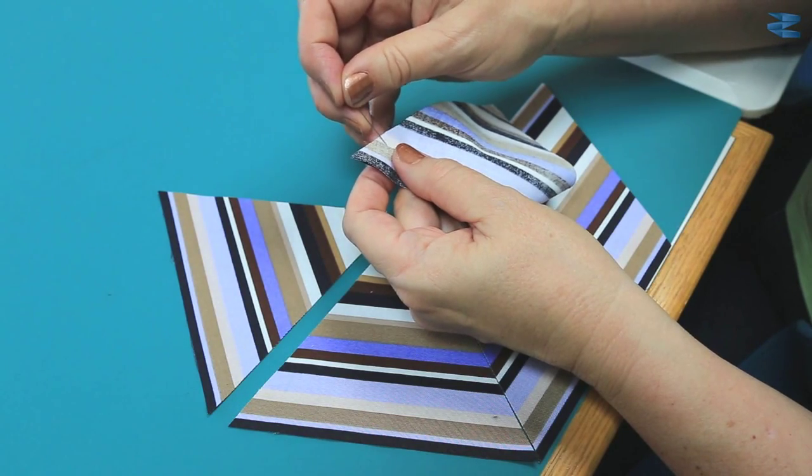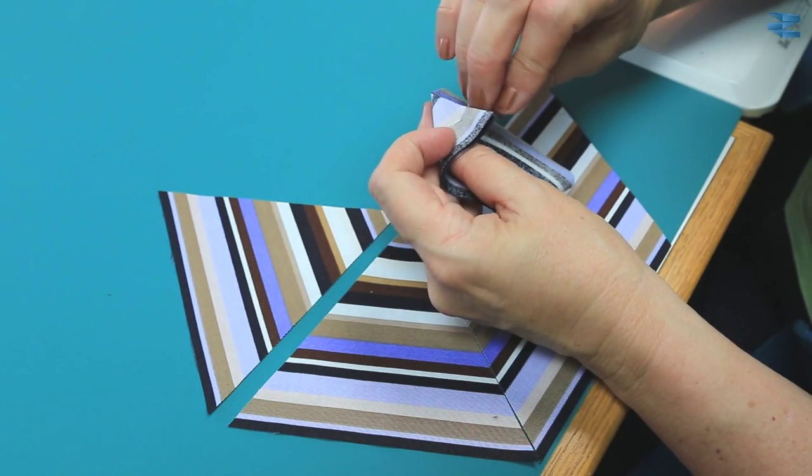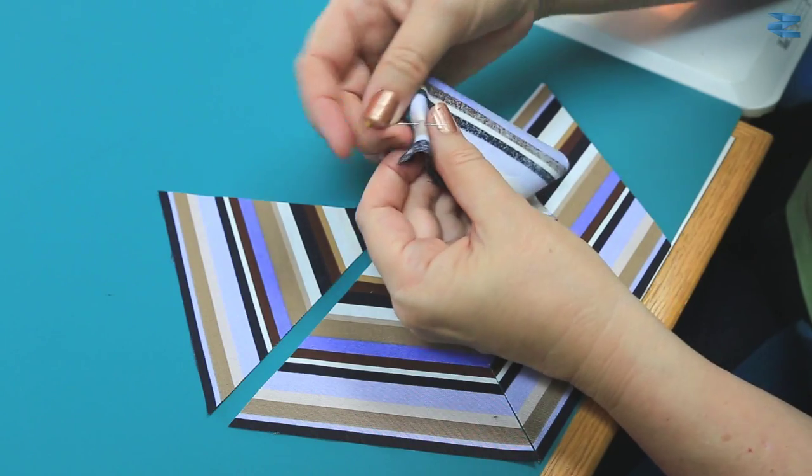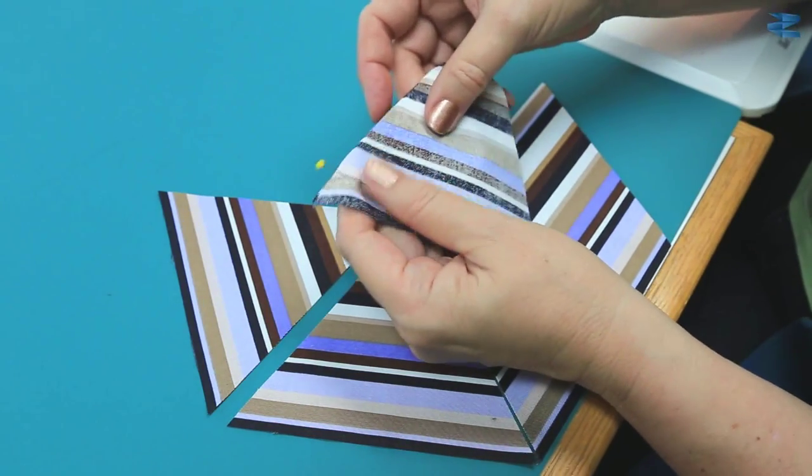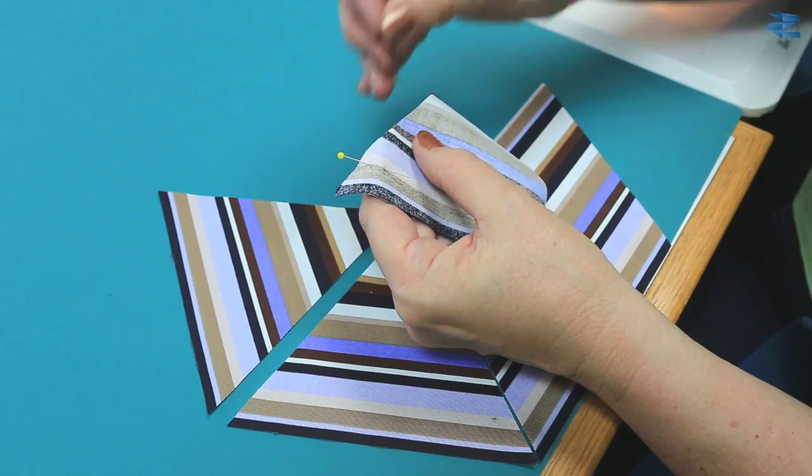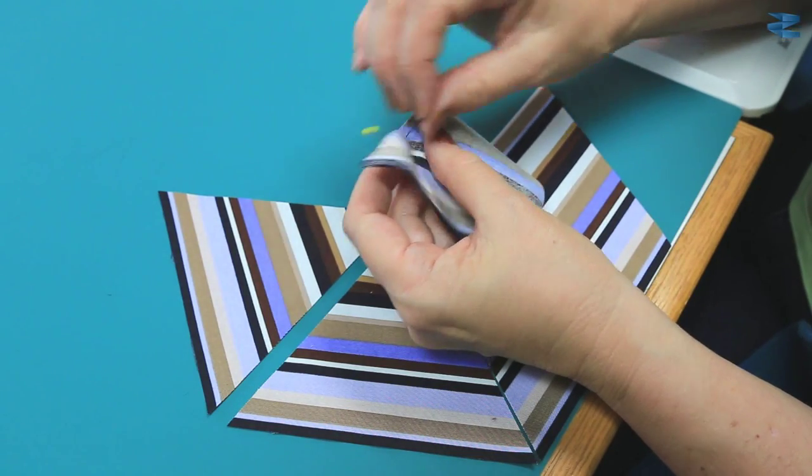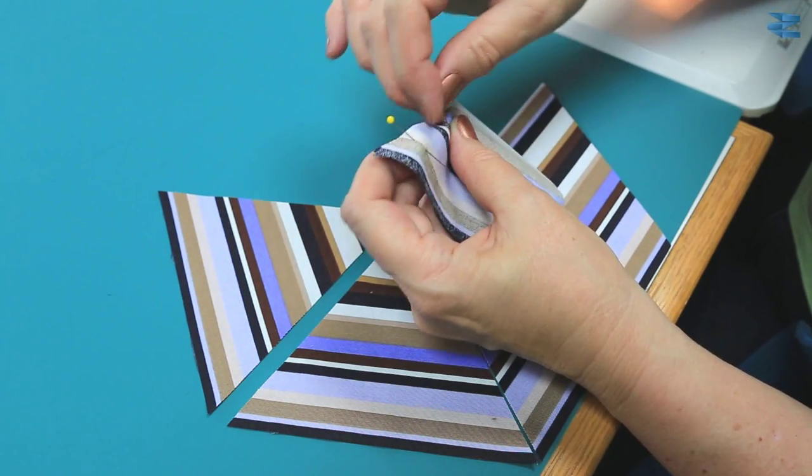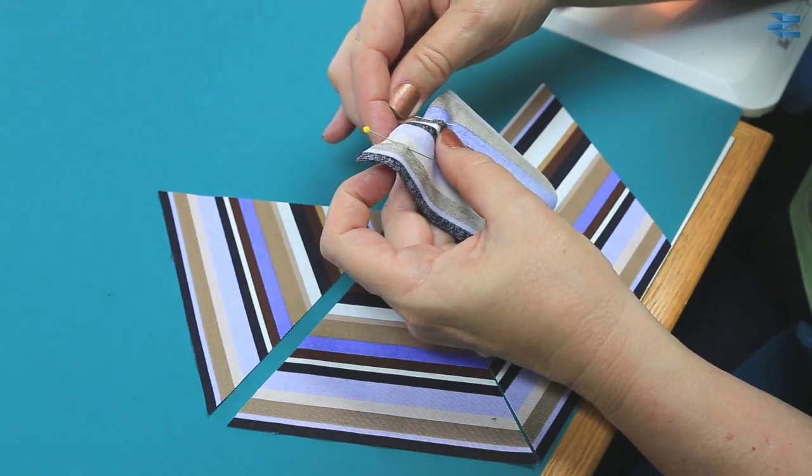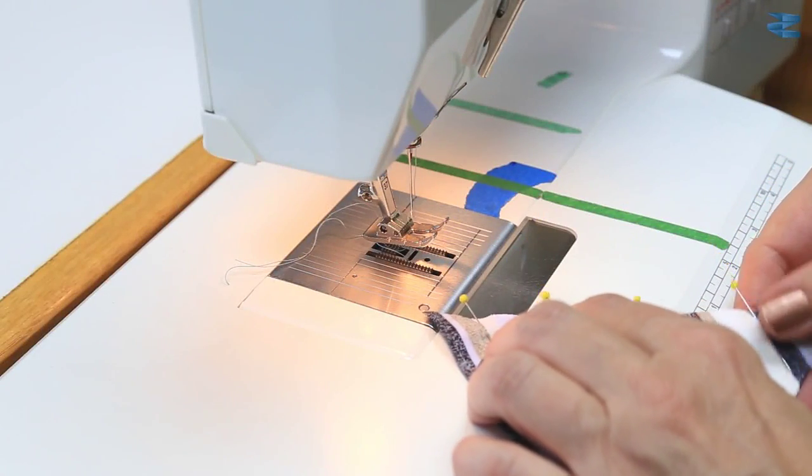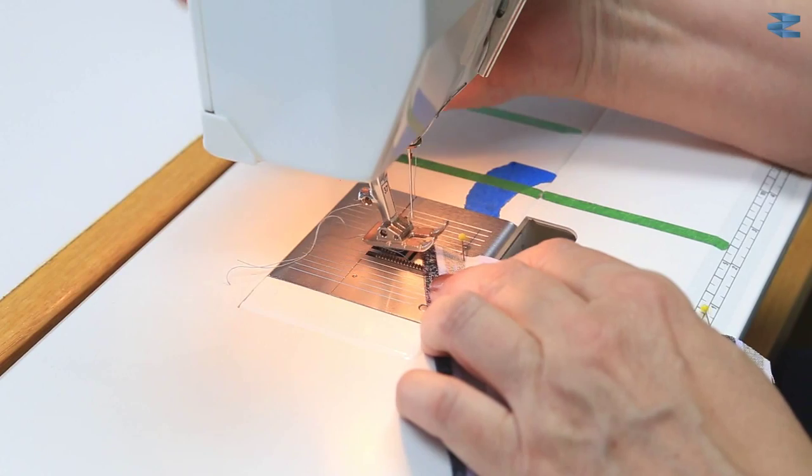Put a pin between the two lines here. Pin it on the other side and poke it through. You only need to do three or four of these for this size of triangle. Your piece is ready to sew together.